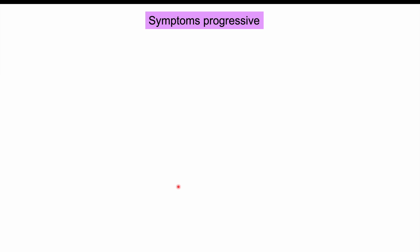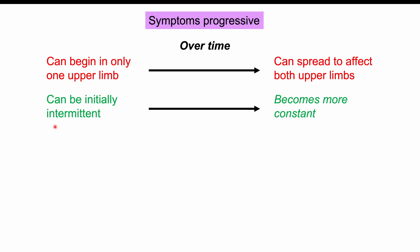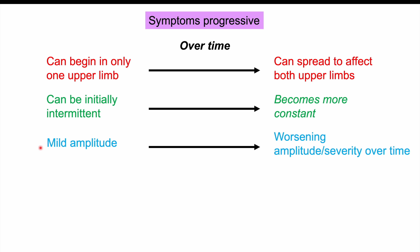Essential tremor is a slowly progressive tremor, meaning symptoms progress and worsen over time. The tremor can begin in only one upper limb — one hand or arm — and over time can spread to the other arm, eventually affecting both. Initially the tremor can be intermittent, occurring only during certain periods especially when exacerbated by stress or other factors, but over time it can become more persistent and constant.